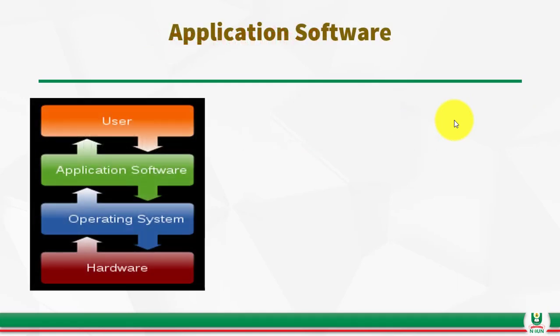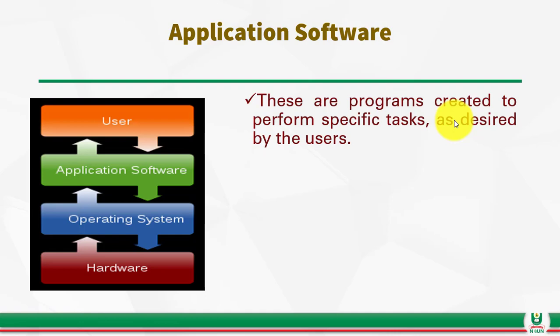Welcome back. Let us proceed to application software. We have two types of computer software: system software, which I just explained, and application software. Application software are basically the programs created to perform specific tasks as desired by the users. Depending on the nature of your job, you need certain things carried out — the software that helps you achieve that is the application software. They are software specifically created to meet the needs of a specific group of end users, which is why they are usually called end user programs.